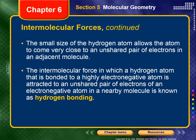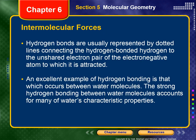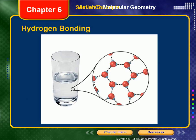The intermolecular force in which a hydrogen atom bonded to a highly electronegative atom (fluorine, oxygen, or nitrogen) is attracted to an unshared pair of electrons of an electronegative atom in a nearby molecule is called hydrogen bonding — even though it is not truly bonding; it is technically a dipole-dipole interaction. Hydrogen bonds are represented by dotted lines. An excellent example is hydrogen bonding between water molecules, which accounts for many of water's characteristic properties.